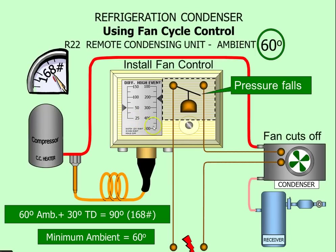Next, look at the pressure settings. There will be screws on the top of the unit to adjust the pointers to the points you want. The differential is the difference in pressure between cut-in and cutout pressure — you want to keep that between 30 and 50 psig. If you set it below 30, the fan is going to cycle on and off very rapidly and you'll burn out the condenser fan. If you set it above 50, the fan is off too long, causing wide swings in head pressure that can also cause metering problems. Start the differential at 40 psig as a good midpoint.